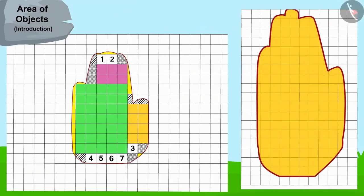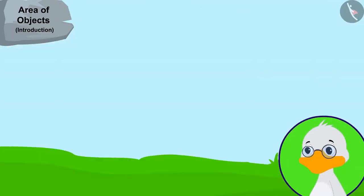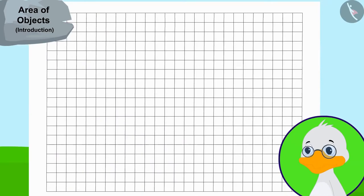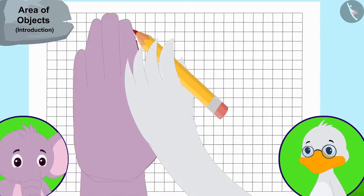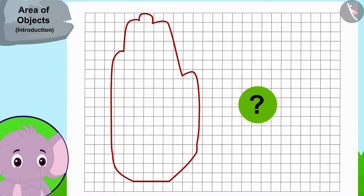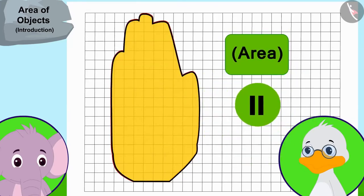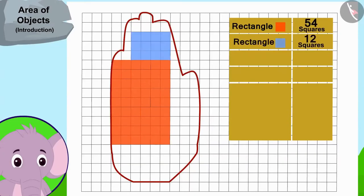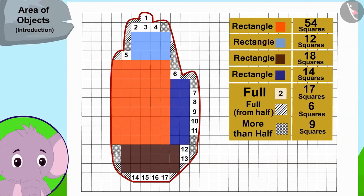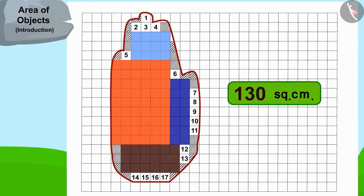But this is not the same as the hand impression on the door. So uncle continued his search and traced Appu's hand. Children, the impression of Appu's hand is shown here. Can you find the area of Appu's hand by the process used by uncle? You can also find the area of Appu's hand impression by making rectangles. The area of Appu's hand impression is one hundred and thirty square centimeters.